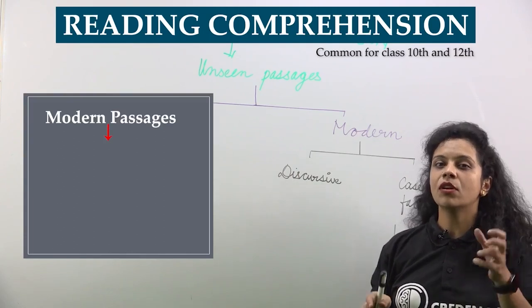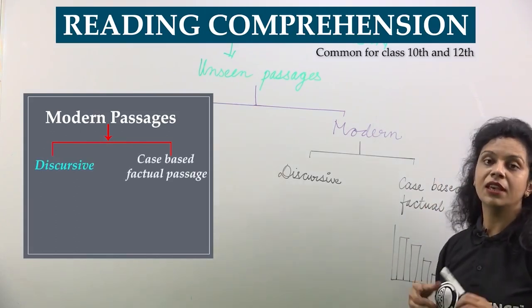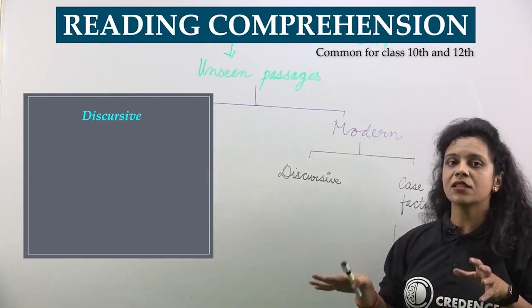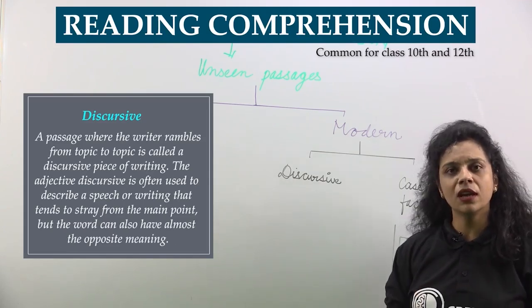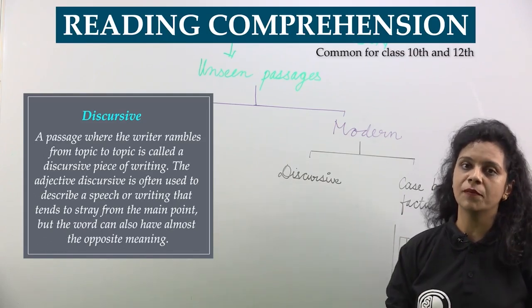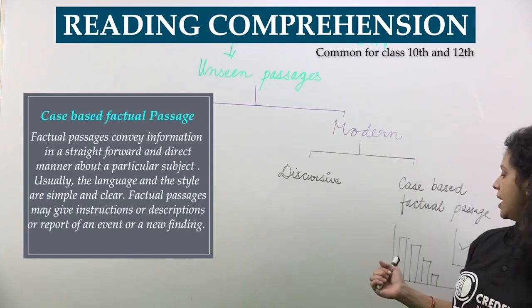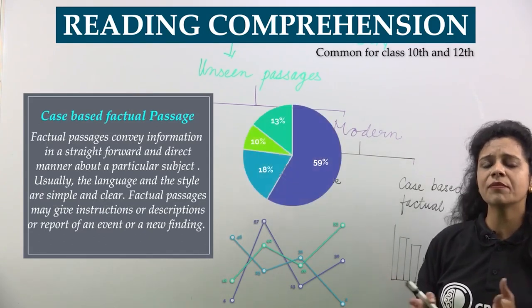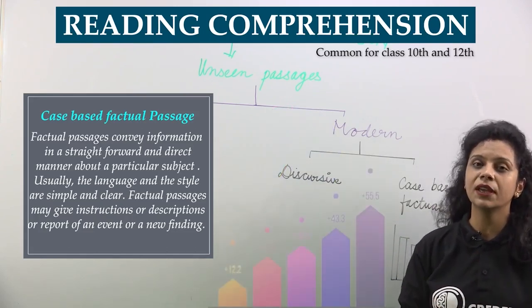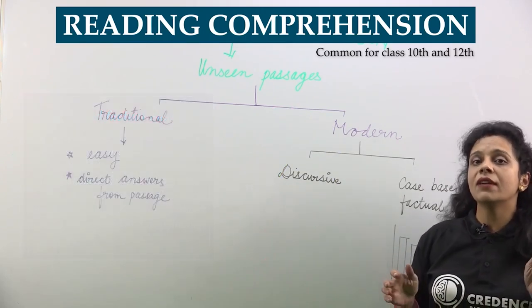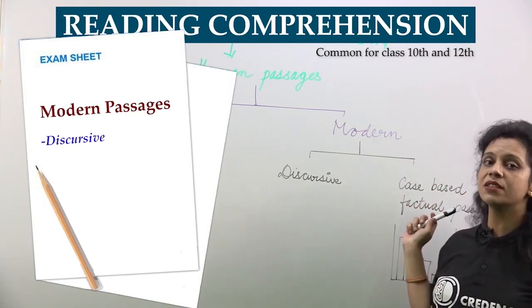If you see your syllabus or your paper pattern, you will see these terms: discursive and case-based factual passage. Case-based factual passages are those wherein you have to read a chart, graph, or histogram — whatever they are giving — and you have to reach a conclusion. So now in your examination question papers you will see modern passages, which include discursive passages and case-based factual passages.